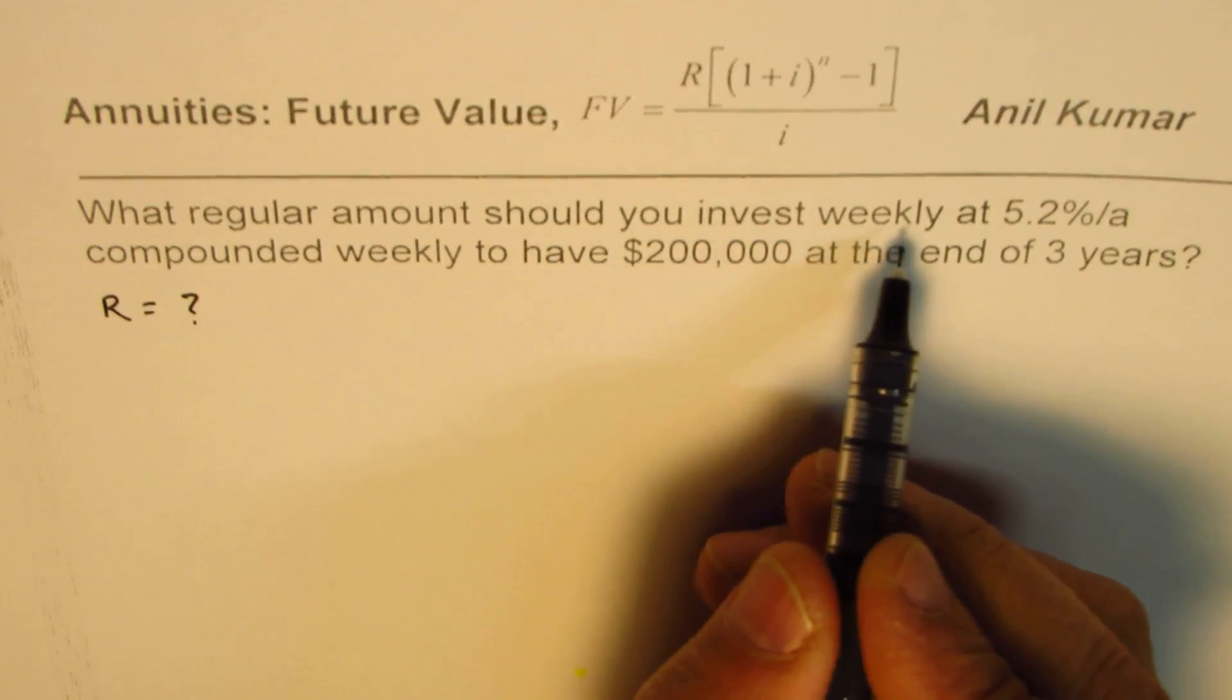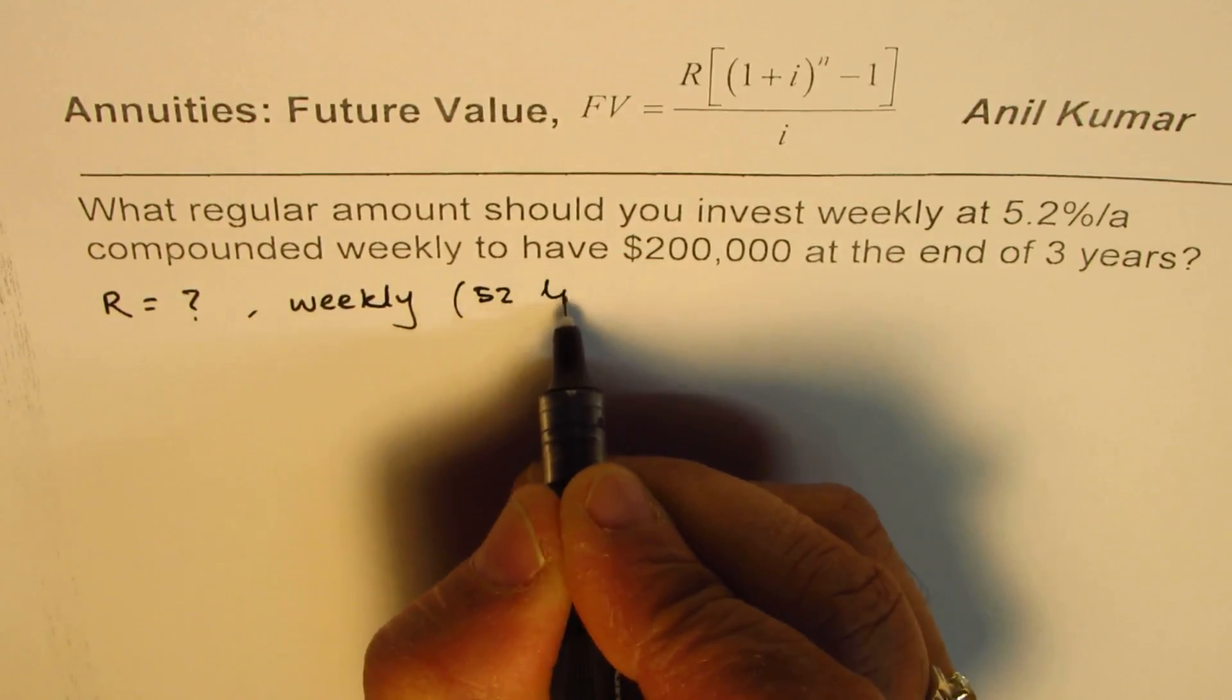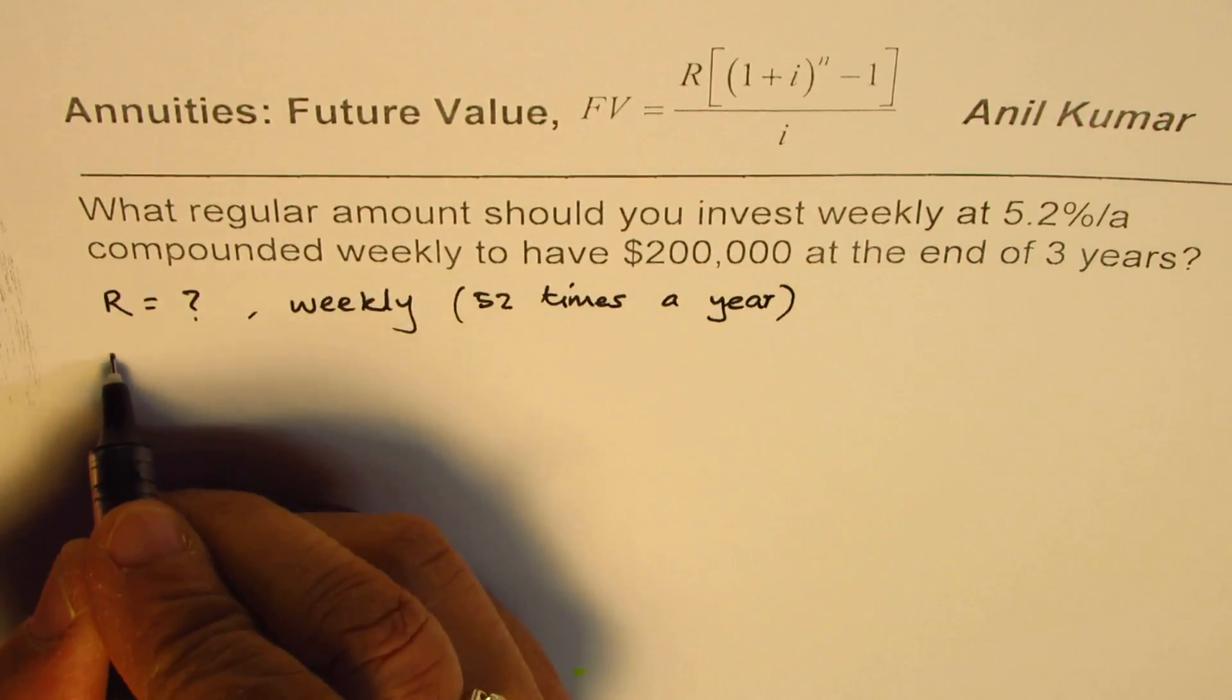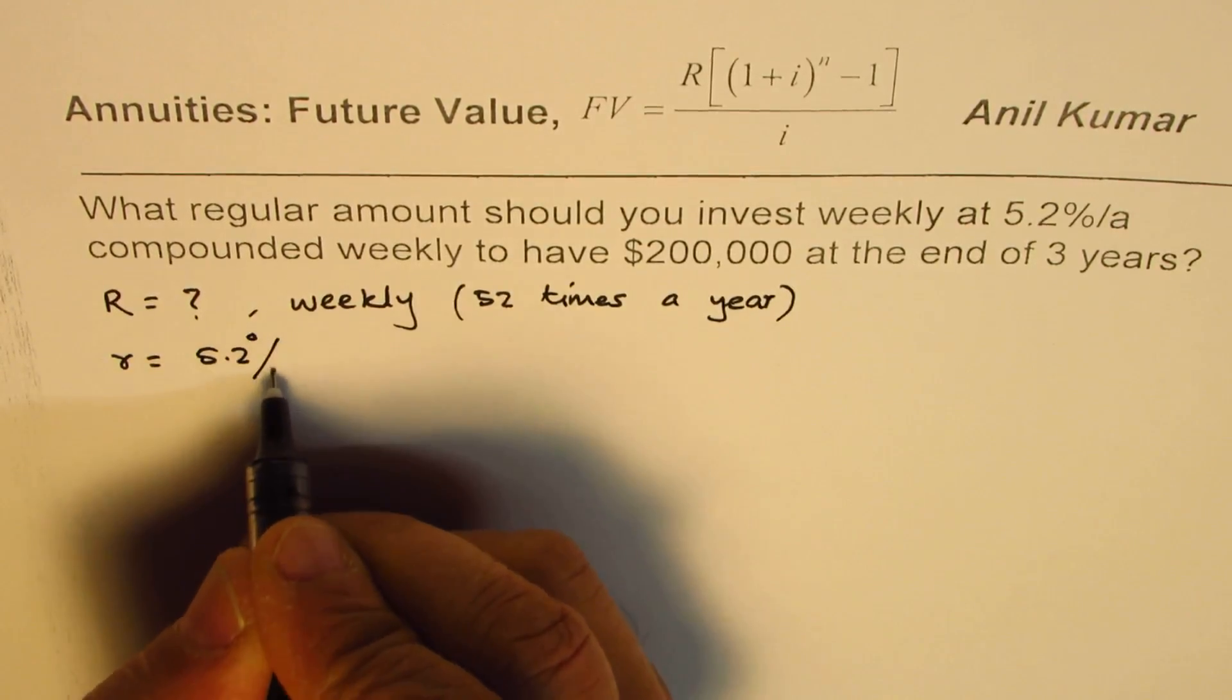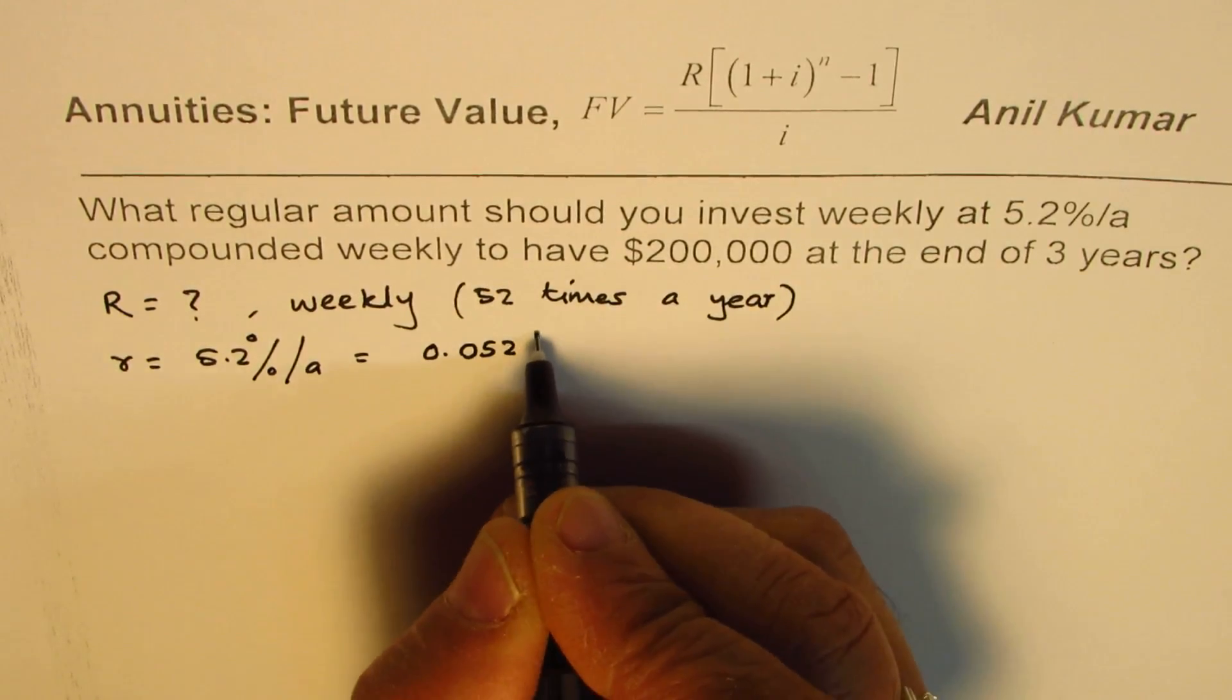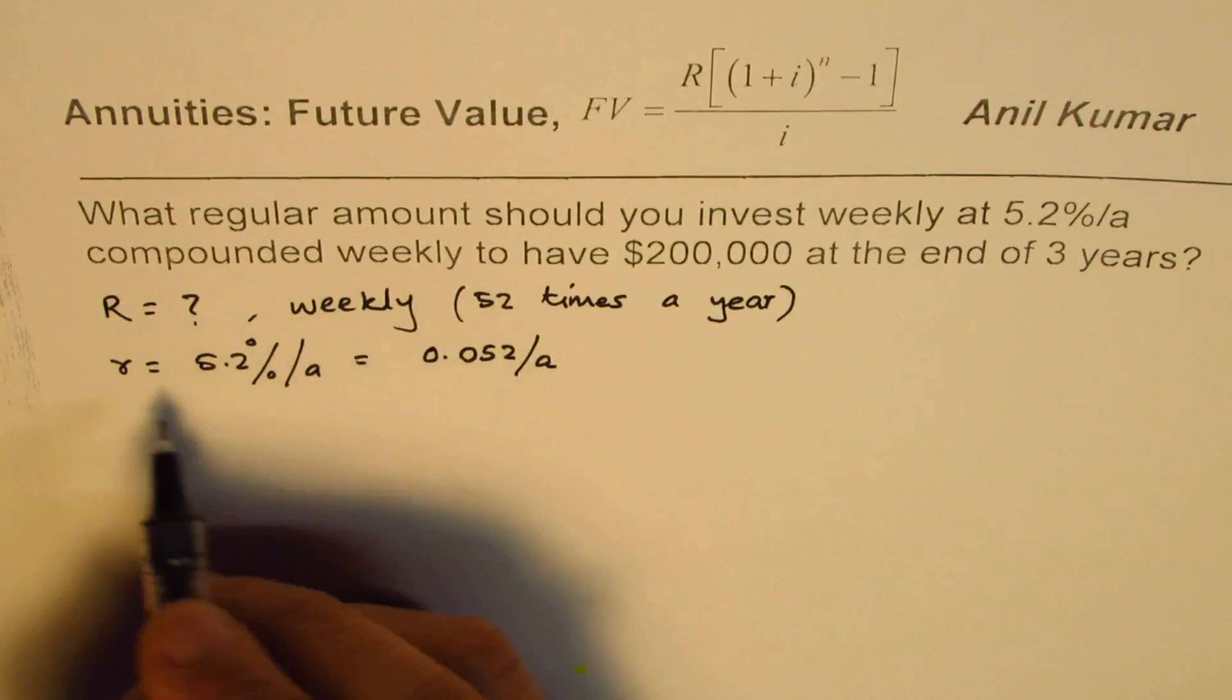Should you invest weekly? So it has to be done weekly. Weekly means 52 times a year. At a rate of interest which is 5.2% per annum, it means 0.052 per annum. When you do it 52 times, that means per week how much?